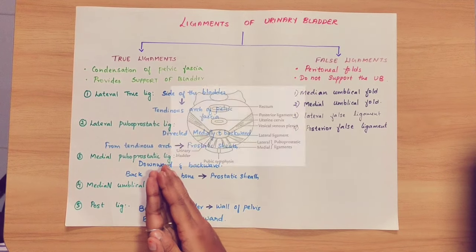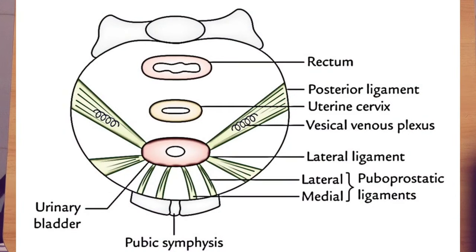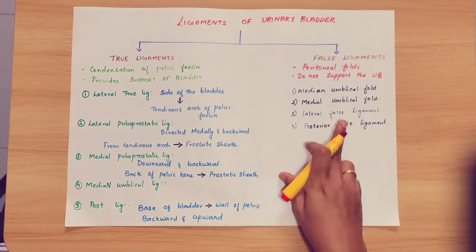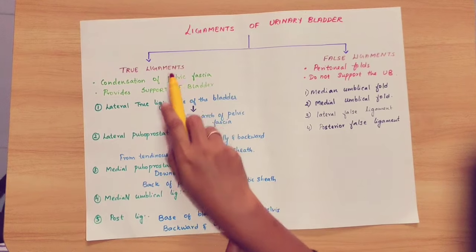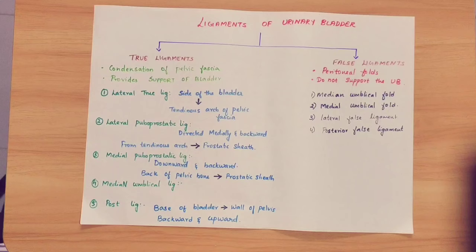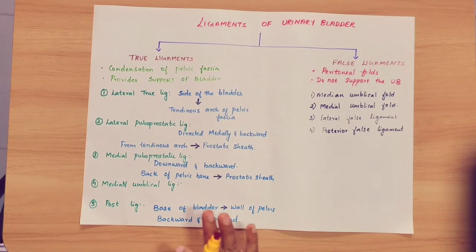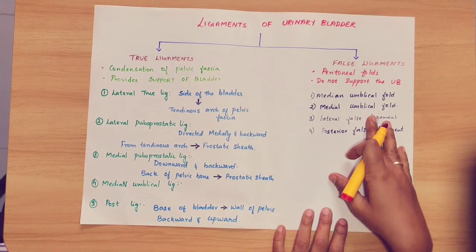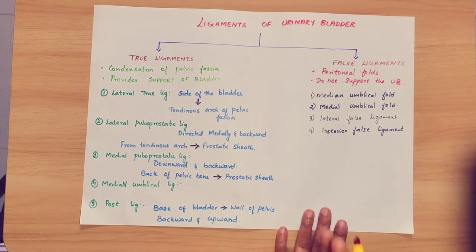True ligaments are fibromuscular ligaments. False ligaments are peritoneal folds — that is why we call them false ligaments. True ligaments of the urinary bladder are a condensation of pelvic fascia, which is not peritoneum, and that is why it supports the urinary bladder.